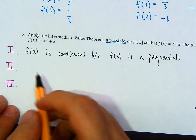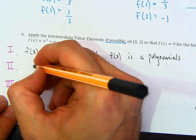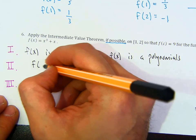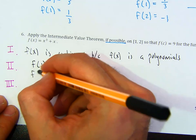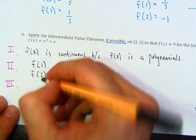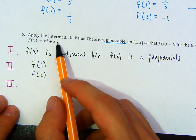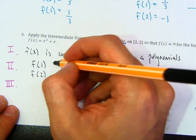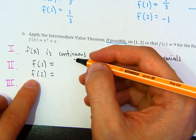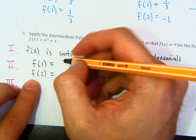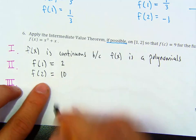Part 2: does f of 1 not equal f of 2? What's f of 1 and what's f of 2? Plug in 1, plug in 2. f of 1 should be 2, and f of 2 should be 10.